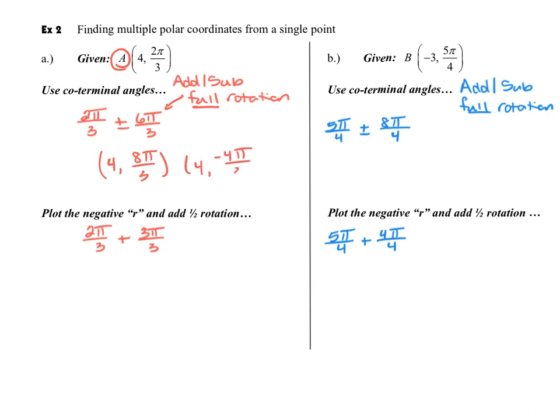And then I'll also have a four comma negative four pi over three. And if you follow the strategy for plotting the points that I just went over up there, you should find that these land in the same place that I plotted the other ones earlier, the other point A earlier.